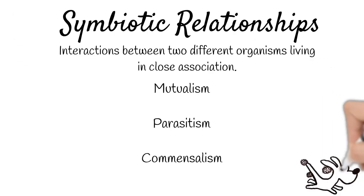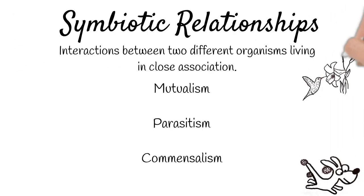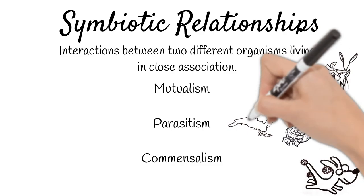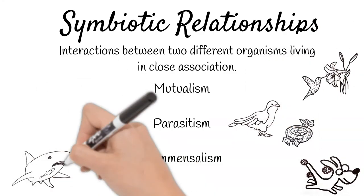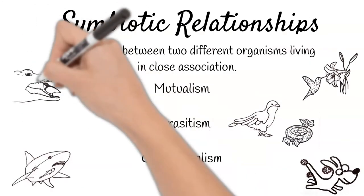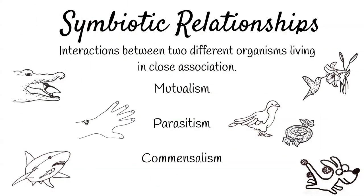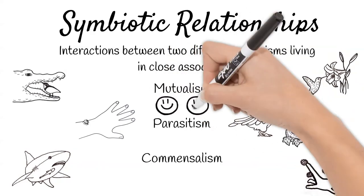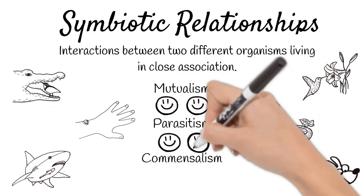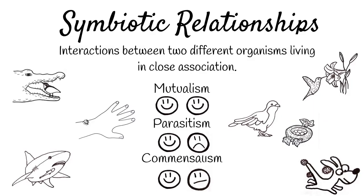These have just been six quick examples of symbiotic relationships — there are many, many more. Look for examples of mutualism, parasitism, and commensalism between organisms where you live.